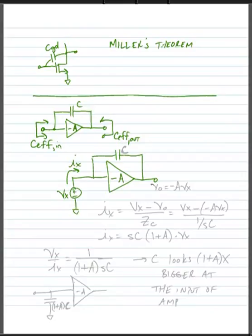Now we note that if this is an ideal amplifier, the output voltage is equal to minus A times V sub X. So we can write the current flowing through capacitor C: I sub X is equal to Vx minus a minus A Vx divided by Zc, which is equal to SC times 1 plus A times Vx.